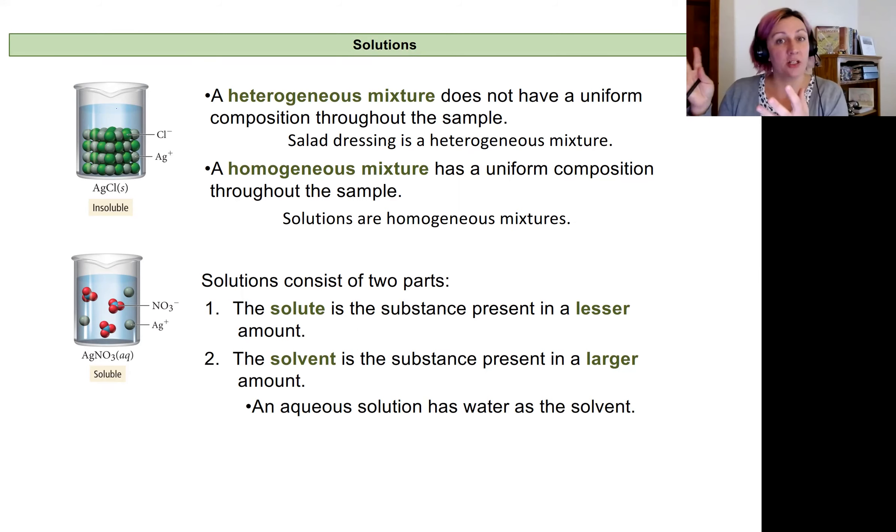Now the opposite of that is a homogeneous mixture, and that has a uniform composition throughout the sample. You can't distinguish one component of the solution versus the other - the solution is just a mixture. Something like this might be simple syrup: you have sugar and water, you mix them at high heat, and then they maintain that homogeneous mixture when you cool it, or something like isopropyl alcohol.